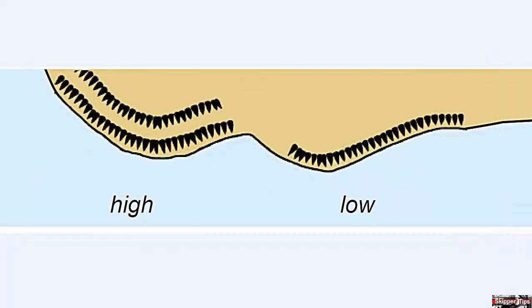Note these serrated teeth just inside this surveyed coastline — this represents cliffs. On the right, the single row represents low cliffs and on the left, two rows represent high cliffs.